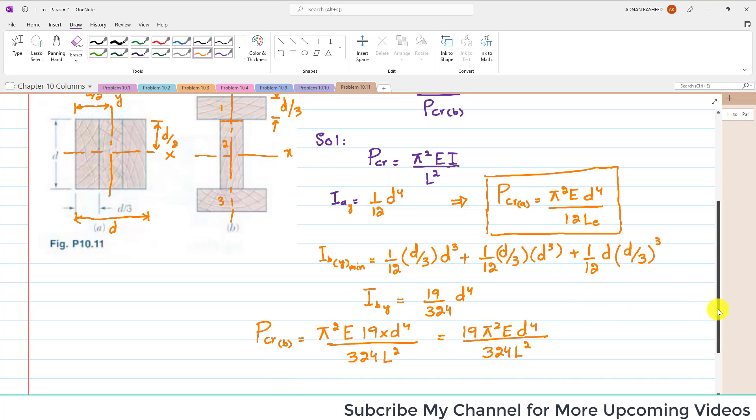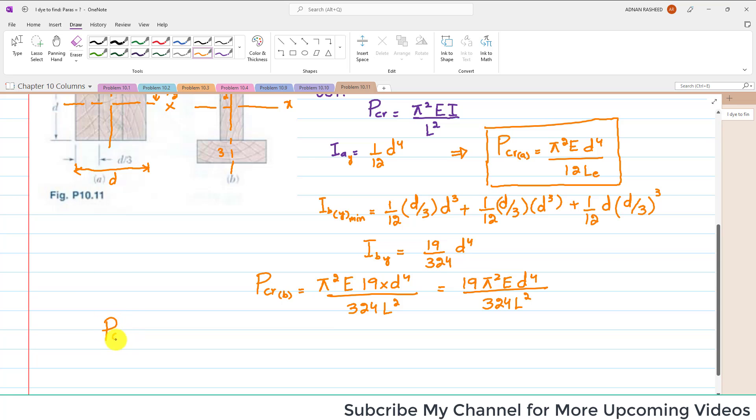We have to find P_critical of A ratio to P_critical of B. That's π²E·D⁴ over 12·L_E² divided by 19π²E·D⁴ over 324·L_E². When you simplify it, it equals 27/19, which equals 1.421. So the ratio of P_critical(A) to P_critical(B) for effective length L is 1.42.